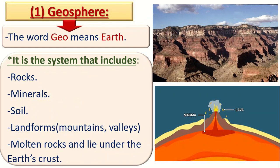In geosphere, the word 'geo' means Earth. The geosphere includes or consists of rocks, minerals, soil, landforms, and molten rocks.